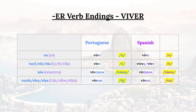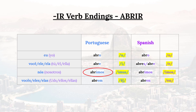So summarizing the present tense verb endings for regular ER verbs using 'viver' as an example: 'vivo,' the O pronounced with a 'u' sound; 'vive,' the E pronounced like an 'i'; 'vivemos,' the O in '-emos' also pronounced like a 'u'; and 'vivem,' the EM pronounced with the nasal 'ẽ' sound. Then the verb endings for IR verbs are the same as ER verbs except in the first person plural 'nós' form, which takes the '-imos' ending. With the verb 'abrir' you have 'abro,' 'abre,' 'abrimos,' and 'abrem.'